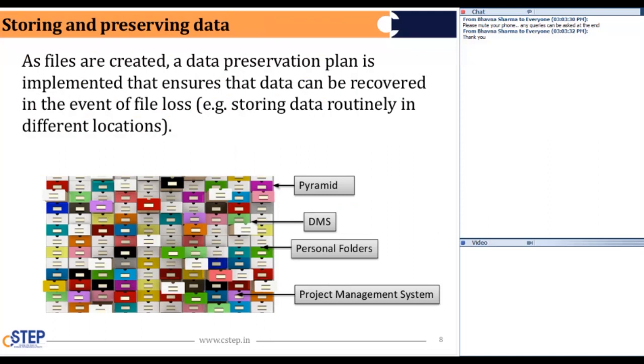Storing and preserving data. As files are created, a data preservation plan is implemented that ensures that data can be recovered in the event of file loss. For example, storing the data routinely in different locations. For instance, the C-STEP is again lucky to have the so many quarters where your backup files are available. If you lost access to your particular folder, then you can make access to other different folders for the same files that you want.